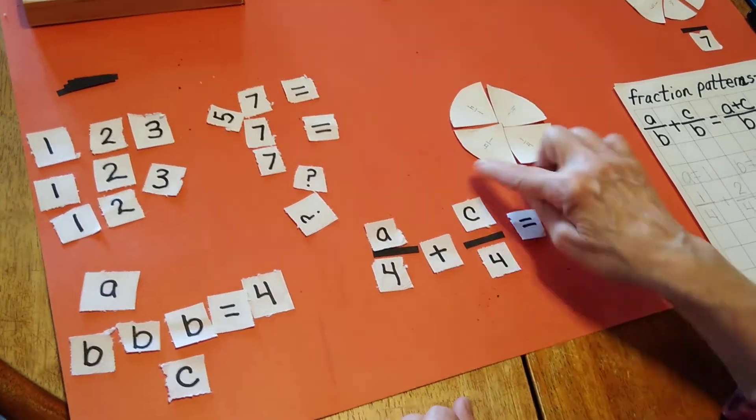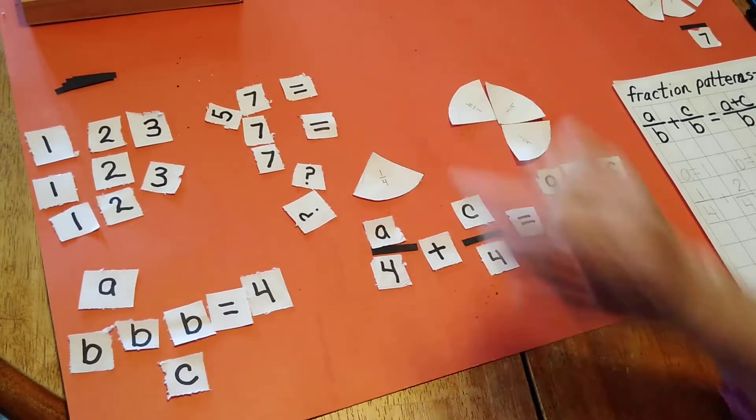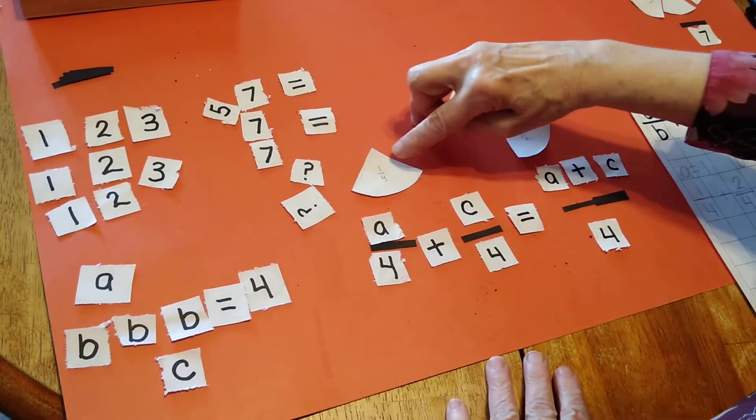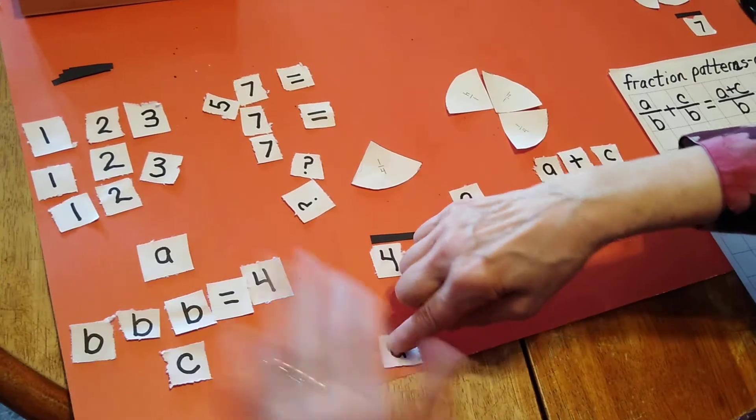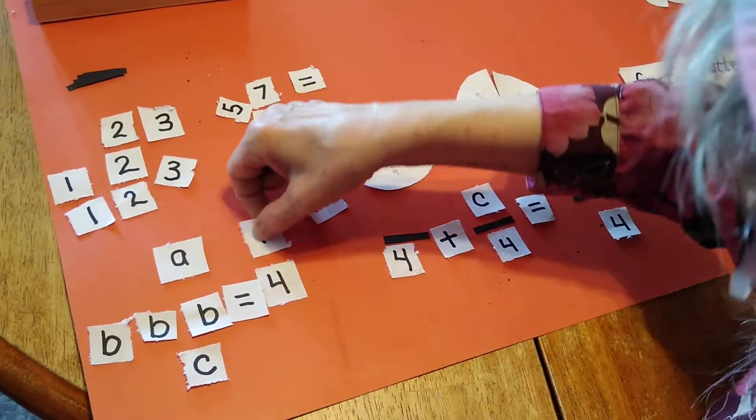I want to talk about this piece first. So I have one of my fourths, so A is going to equal one.